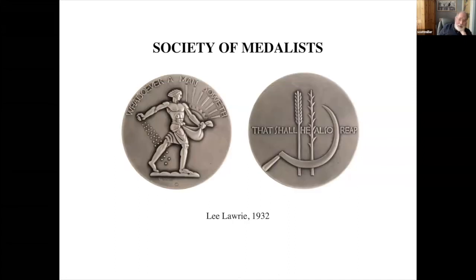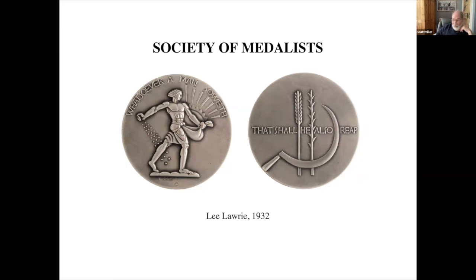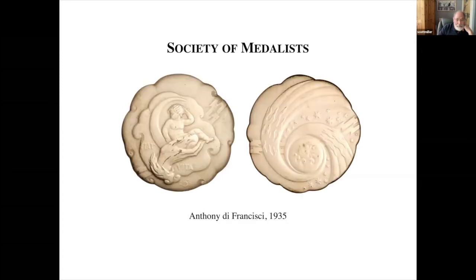This is Lee Laurie's Society of Medalists piece. 'Whatsoever man soweth,' issued at the very beginning of the Dust Bowl period — I don't think he necessarily had that in mind, but also the Art Deco style Laurie was known for. Laurie is probably best known for his work in Rockefeller Center at 30 Rock — his wonderful building relief of Wisdom, which is man holding the compass. Beginning to notice here: still Art Deco, but beginning to use the shape of the medal as part of the design. It's not just a round piece anymore — the shape is part of the created imagery.